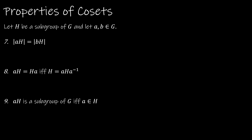Property 7: The order of AH equals the order of BH. This should make sense — all cosets have the same number of elements as H itself. When H was {1, 11}, every coset had size 2. When H was {0, 3, 6}, every coset had size 3.